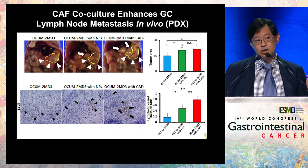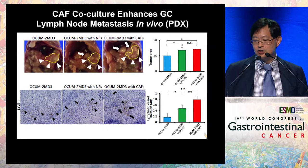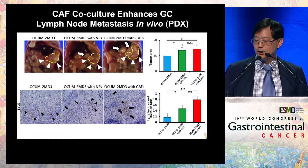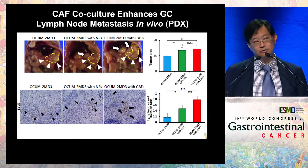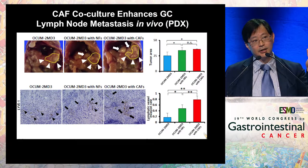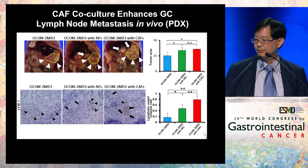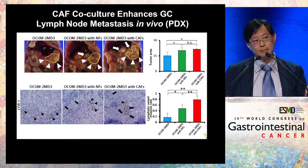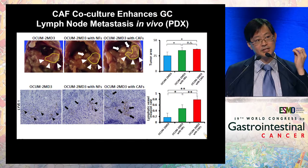In an orthotopic model, we've injected the cancer cells and CAFs together into the stomach of mice and asked whether this changes local growth and lymph node metastasis. Co-injecting cancer cells with normal fibroblasts versus cancer cells with CAFs showed that local cell proliferation does not change much — consistent with what we see in the human setting, where diffuse-type cancers don't really show much more cell proliferation than intestinal-type cancers. But at the level of metastasis to adjacent lymph nodes, we see a significant increase when co-injecting with CAFs, suggesting that CAFs in diffuse-type cancer accelerate the pro-metastatic program.